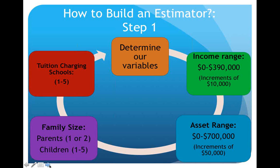We started with an income range. My colleague Charlie Iannuzzi and I set an income range from zero to $390,000 with increments of $10,000. The asset range was zero to $700,000 in increments of $50,000. Family size maxed out from one to a family of five, and the same with tuition-charging schools. This was sort of the Hotchkiss Estimator 1.0 version. Towards the end I'll share how we built a 2.0 version.